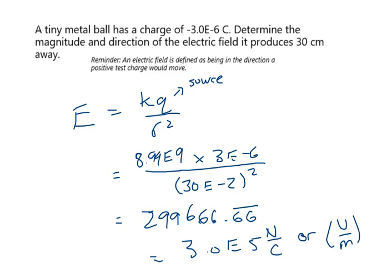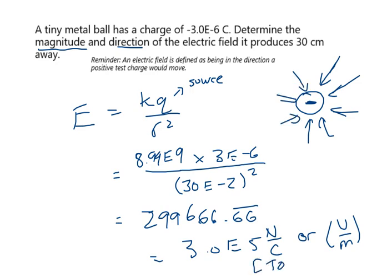We also need a direction. The tiny metal ball is negatively charged, so a hypothetical proton would want to be attracted to it. The direction would be inwards or towards the ball. If I had left, right, up, down, or cardinal directions, I'd use those. So 30 centimeters away would be at this location here, and the direction of the field is towards the source. To answer the earlier question: yes, distance affects the field. But if I give you the force value directly, don't worry about distance. If I give you distance and charge, use E = KQ/r² instead.